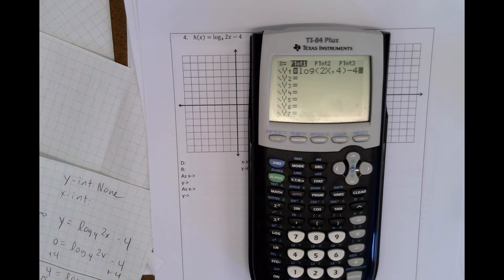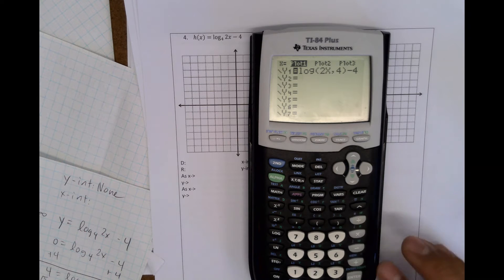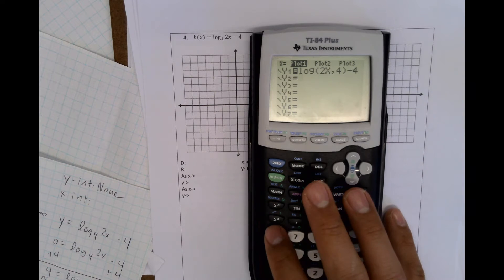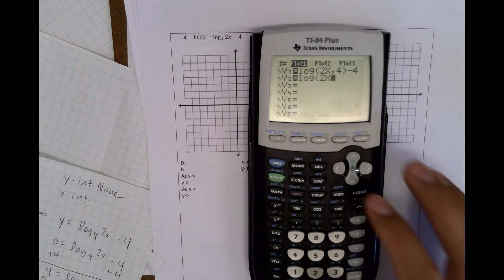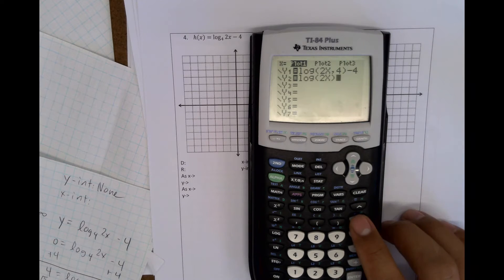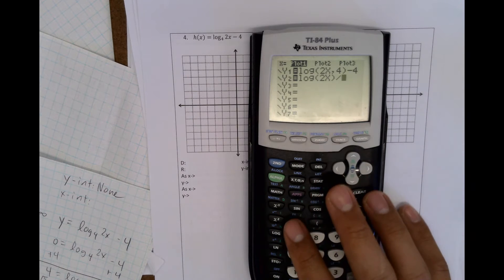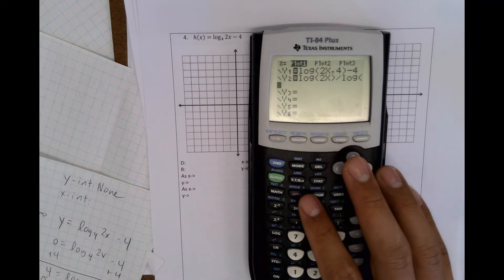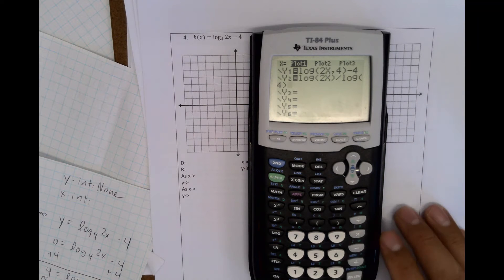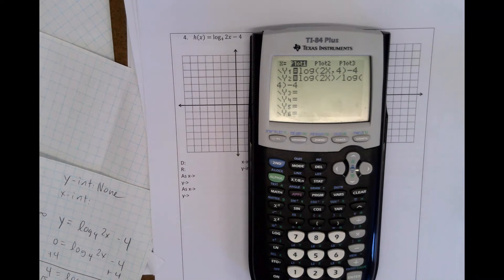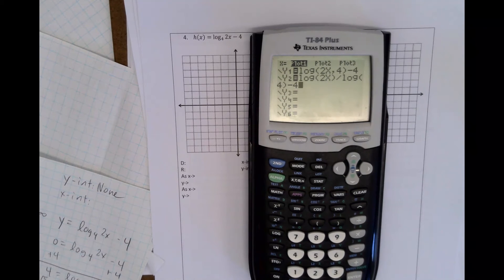So the reason the minus 4 is not on the inside is because there's not a parenthesis around 2x minus 4. If you have an old calculator, you would type it in as log 2x, parenthesis, divided by log 4, parenthesis, minus 4. So if you have an old calculator, so a TI-83 or older, you could type it in the second way.